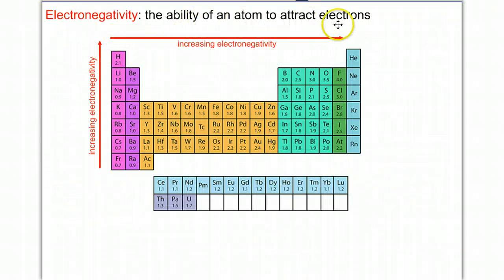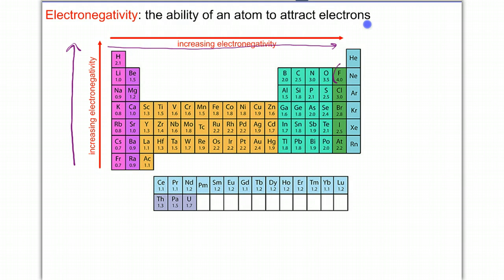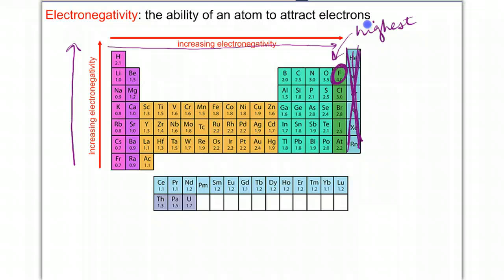Electronegativity is the ability of an atom to attract electrons to itself. The pattern is: as you go up a group, electronegativity increases, and moving to the right in a period, it also increases. Fluorine has the highest electronegativity. The noble gases have no electronegativity — because they're already stable and not trying to attract electrons to themselves.